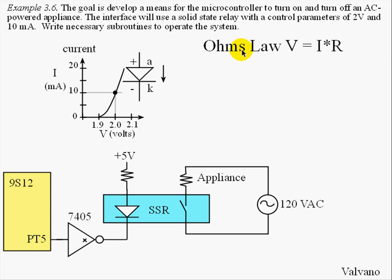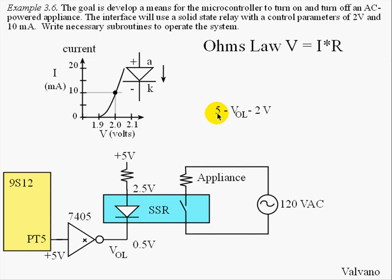Let's use Ohm's Law to choose this resistor. When the software sets PT5 high, there will be 5 volts here and it will drive the output of this device to the output low voltage of this driver. The output low voltage of this driver is about 0.5 volts. If we do things properly, we're going to get 2 volts drop across the diode, making this voltage 2.5. The voltage across this resistor is 5 minus VOL minus 2 volts.